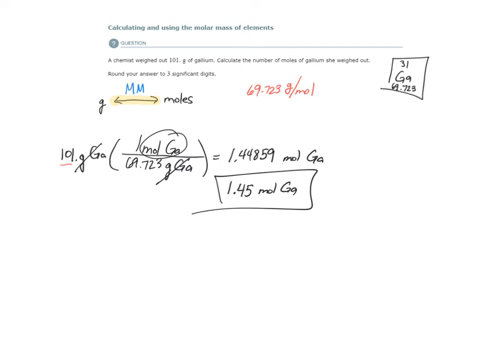We can kind of check ourselves. Conceptually, this should make sense. If the molar mass of gallium is 69.7 grams, meaning that's how many grams are in one mole of gallium. If I have 100 grams, 101 grams,